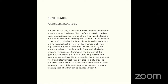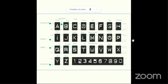Hello everyone. My name is Ivan, and the typeface that I studied and researched is called Punch Label. This typeface may have originated in the 2000s and is most likely inspired by Claude Garamond, the creator of the font Garamond. This image shows a breakdown of the anatomy of the typeface, which is very simple — it consists of not very well-defined letters surrounded by a black rectangular shape that separates words and letters.